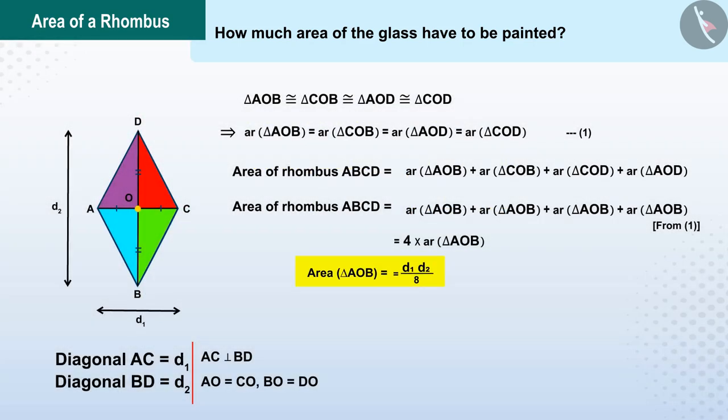So now, can you find the area of rhombus ABCD? As we have read, the area of ABCD is 4 times the area of AOB.